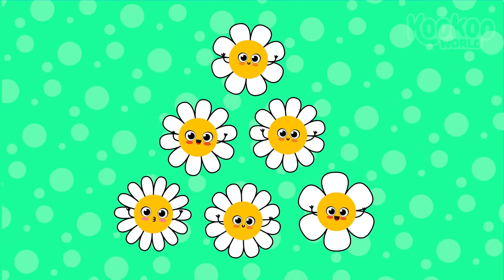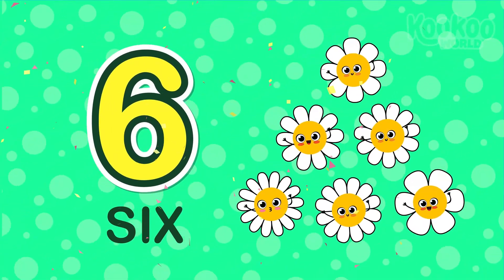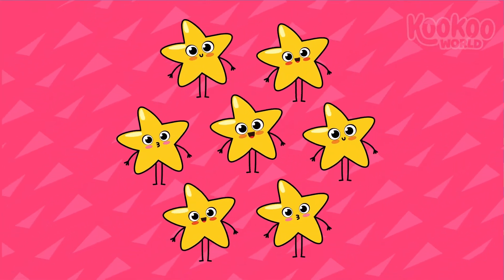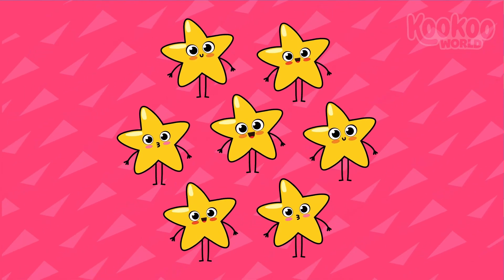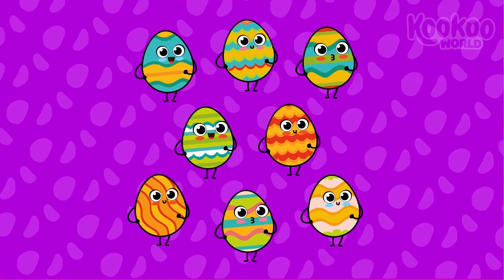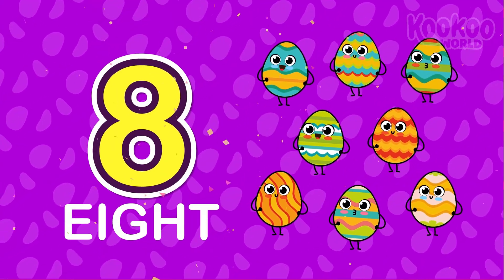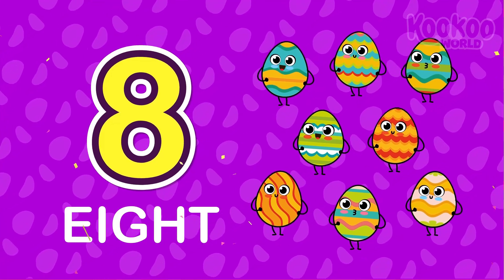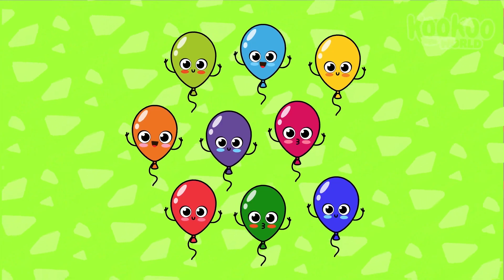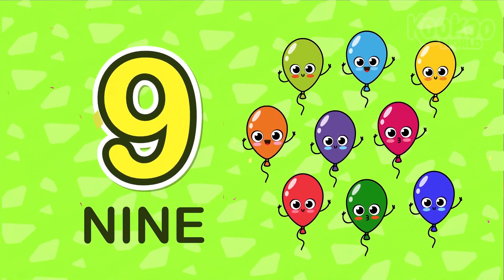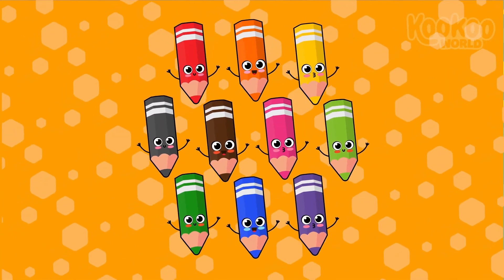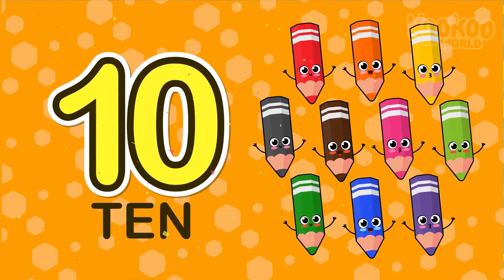How many flowers are there? Six flowers. Excellent. How many stars do we have here? Seven stars. Perfect. And here, how many chocolate eggs are there? Eight chocolate eggs. Amazing. How many balloons are there here? Nine balloons. Very good. And now, how many pencils do we have here? Ten pencils. Excellent.